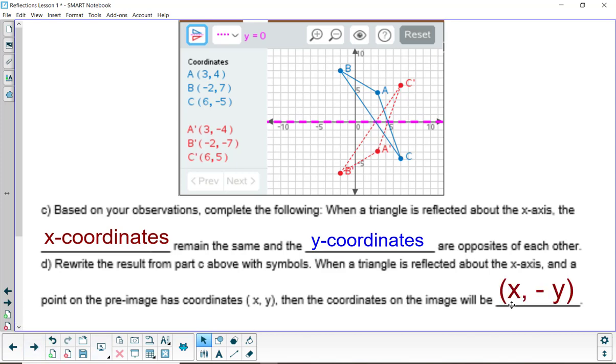And that would be the ordered pair x comma opposite of y. So it says in symbols what this says up here in words. And it's important that you understand both.